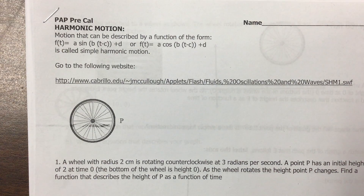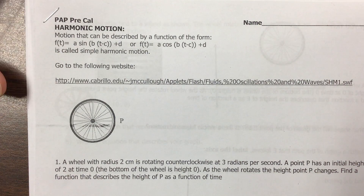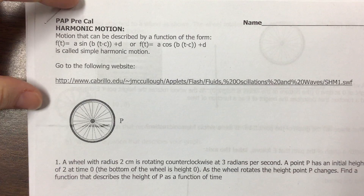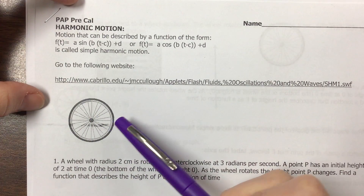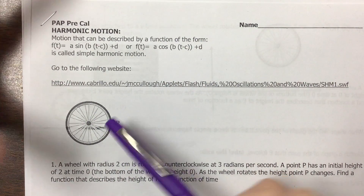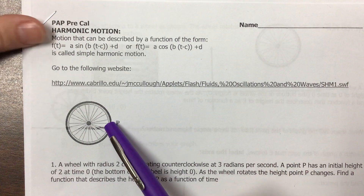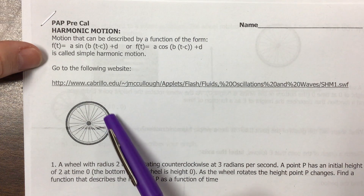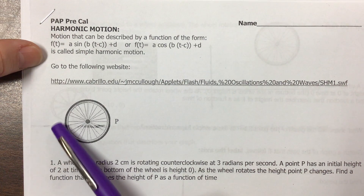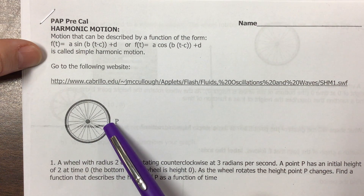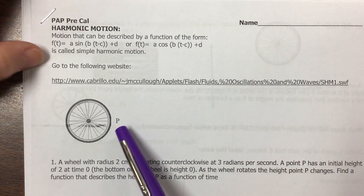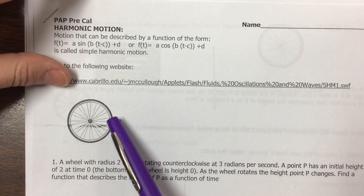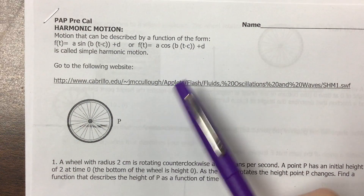We're going to look at this first harmonic motion problem. What is happening here is we can think of this as like being a piece of gum on a tire or something, and we want to write an equation for the height of that gum as a function of time. How high does that gum go? It's at point P.